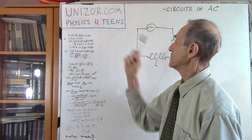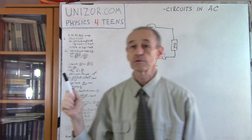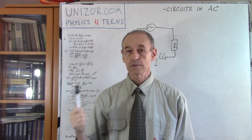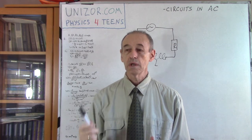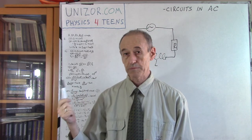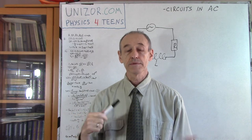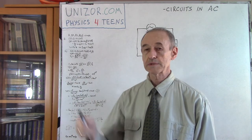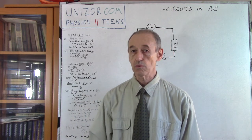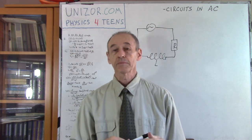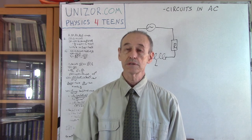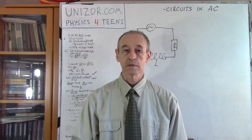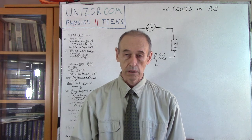This lecture is part of the course called Physics for Teens, presented on unizor.com. Every lecture on this website contains detailed notes, so I recommend you to watch this lecture from the website rather than if you found it on YouTube or wherever. You go to the website, choose the Physics for Teens course, and this is the part called Electromagnetism, and the chapter is Ohm's Law for alternating current.